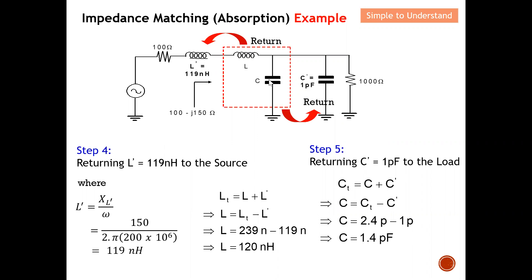For the capacitor: the total calculated capacitor is 2.4 picofarad. Since the load-side capacitor is 1 picofarad and they are in parallel, I return back by subtracting 1 picofarad from 2.4, giving the matching network capacitor a value of 1.4 picofarad. When these two capacitors — 1.4 pF and 1 pF — are in parallel, they combine by addition to equal 2.4 picofarad, confirming the result.